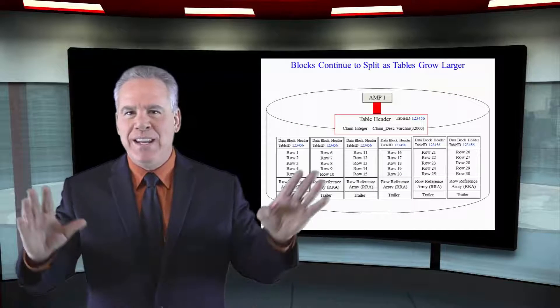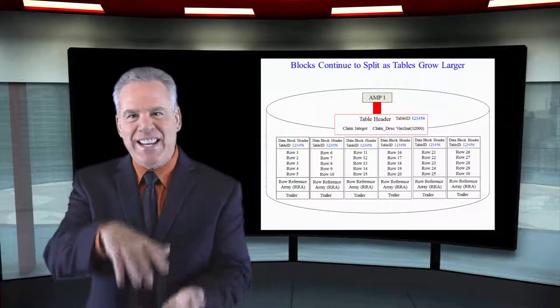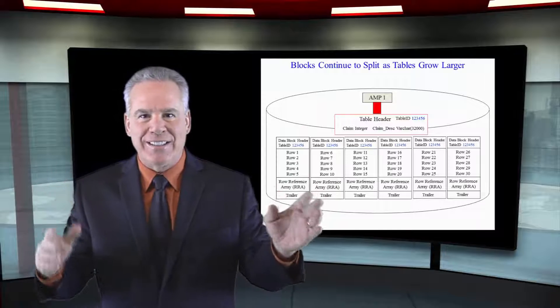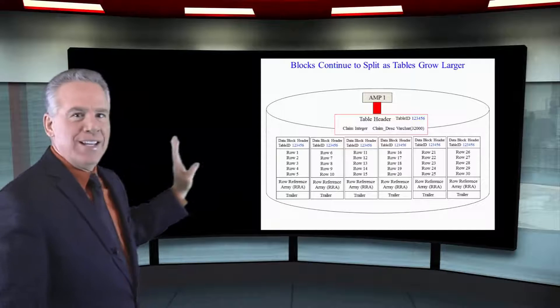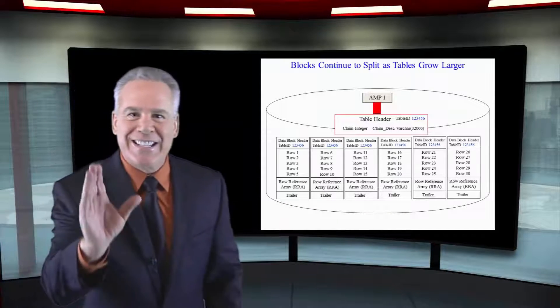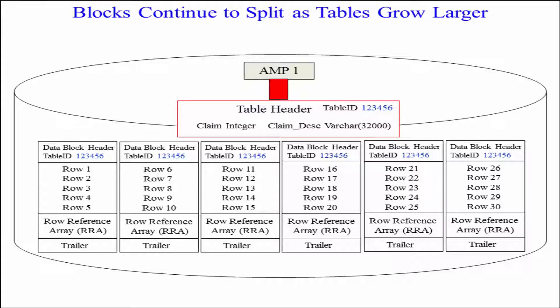Without any DBA intervention, data is loaded in these blocks and it splits. Take a look at this. We can see that we actually have one table here with six blocks in it. Notice the table header and the trailer is in everything. There's a row reference array in everything. And, we've got our rows there in row ID order. And, the amp looking in the master index would be able to see these very clearly. That's the way it works.